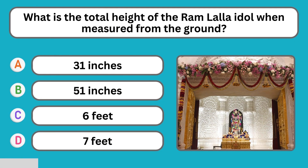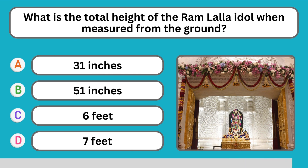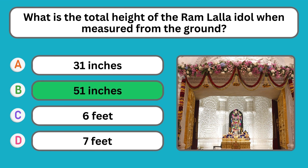What is the total height of the Ram Lalla idol when measured from the ground? Fifty-one inches.